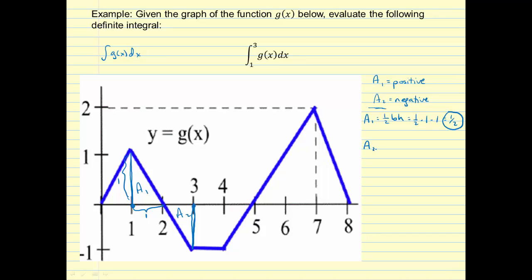A2, in this case, which is going to be negative because it's below the x-axis, it's got the same base of 1 and the same height of 1. So it's going to be negative 1/2 base times height. Negative 1/2 times 1 times 1, which is negative 1/2.